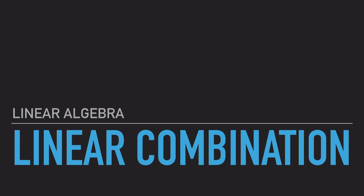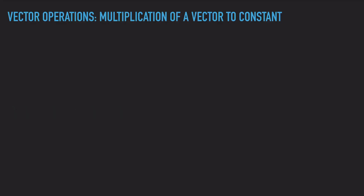Before we talk about linear combinations of vectors, I would like to discuss the operations with vectors we can perform. The first is multiplication of a vector by a constant, and basically what it does is scale the vector. So if you are given a vector u, by just multiplying u by some constant k, we are going to change the length of this vector.